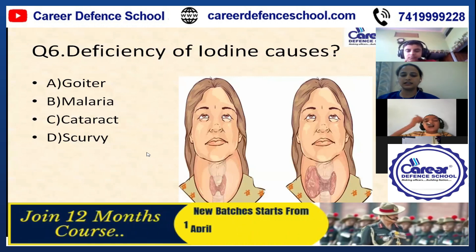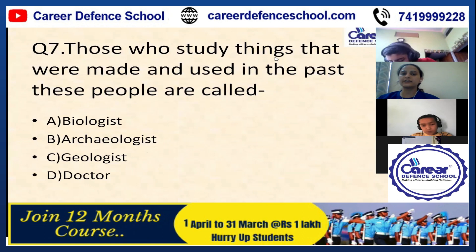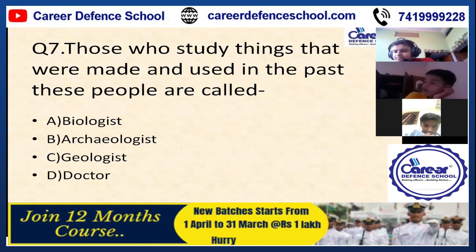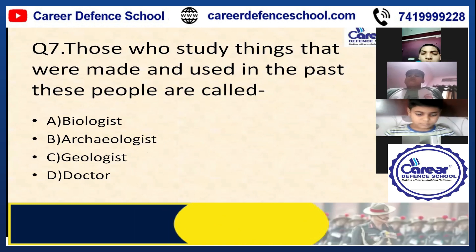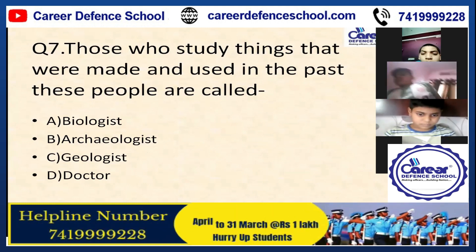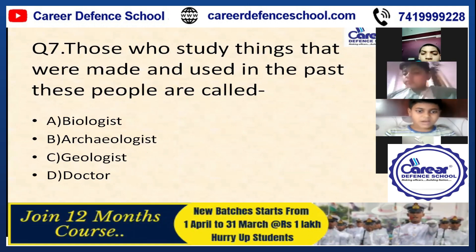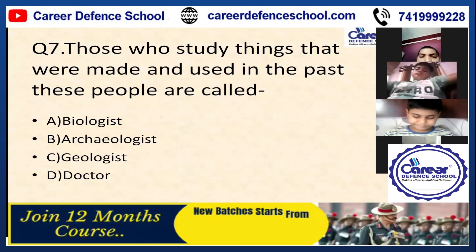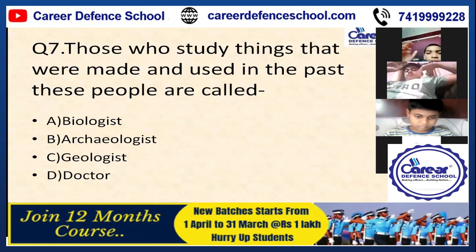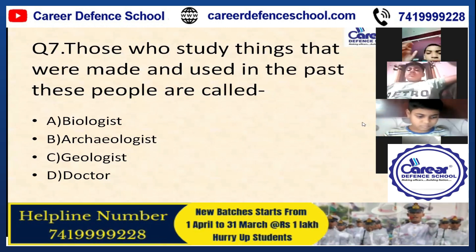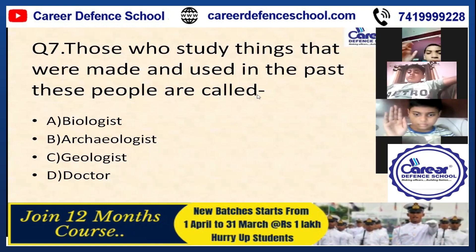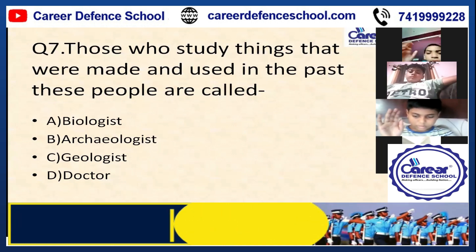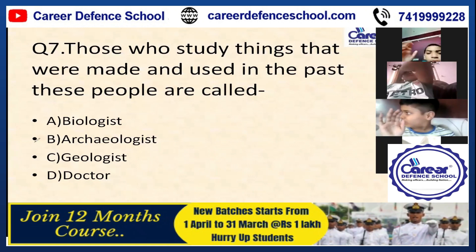Next question: those who study things that were made and used in the past — these people are called? Biologists study human beings, animals, and plants. Geologists study rocks. Archaeologist — very good. Archaeologists study history and the past. These are called archaeologists. Its answer is B — archaeologist.